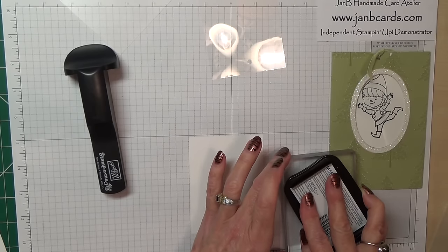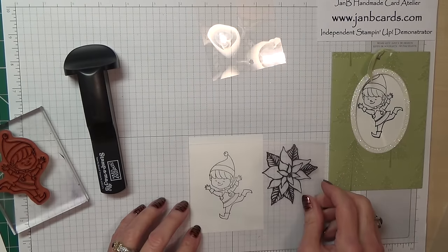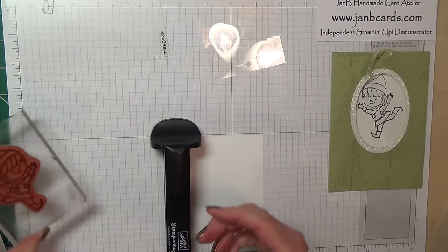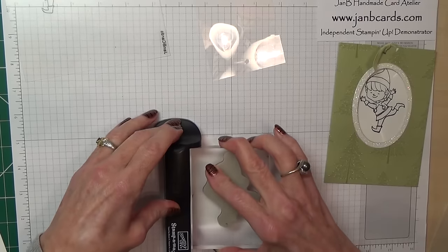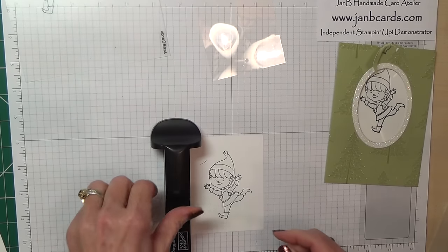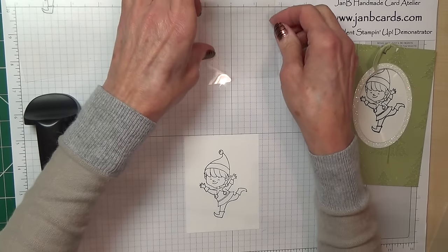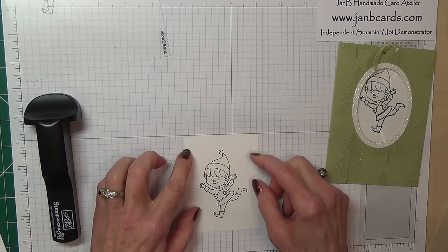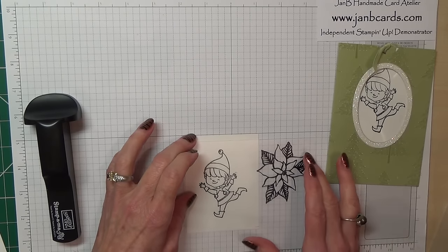First of all I'm going to stamp my image using Memento ink on cardstock which is here. I need this to be about three quarters of an inch down, so I want the top of his hat to come about there. So ink him up and use the Stamp-a-ma-jig tool.